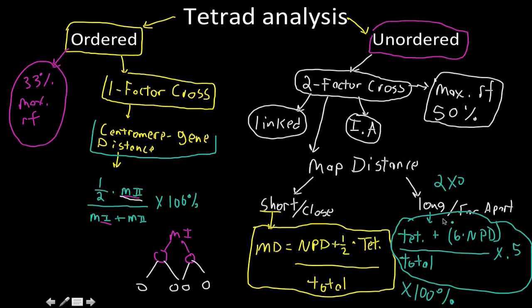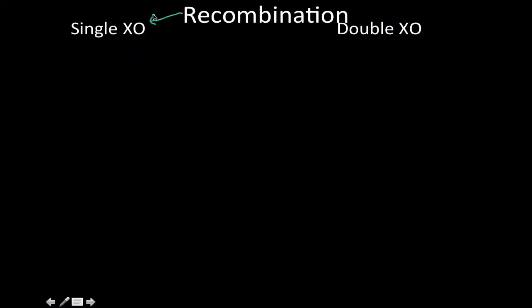Or if they're far apart, we account for double crossovers: tetratype plus six times non-parental dietype, divided by total, times 0.5 times 100%, to get map units.